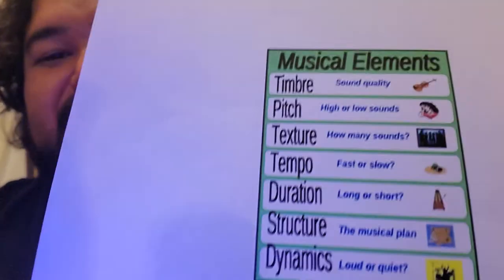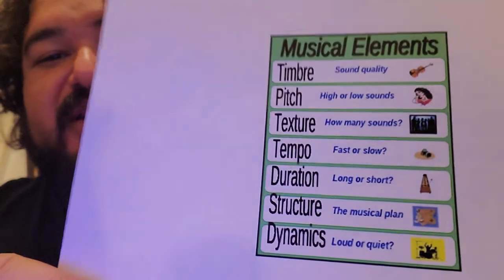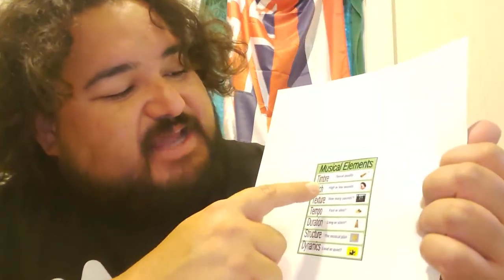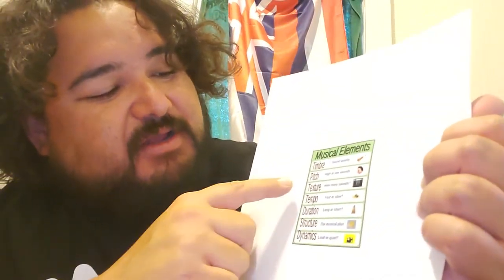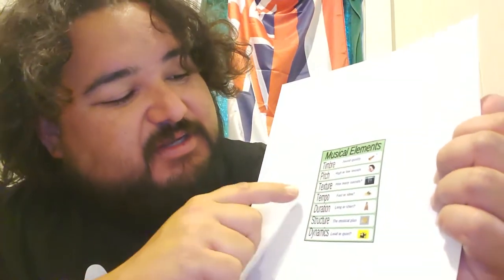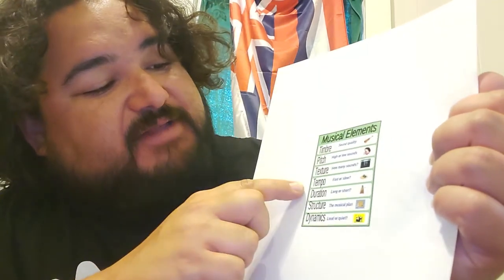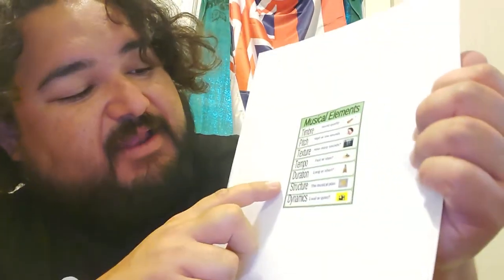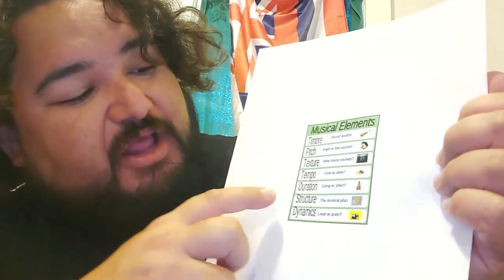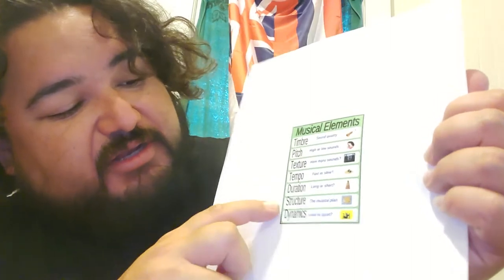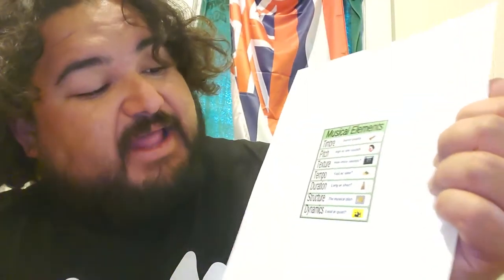Now I wanted to share some of the musical elements — remember the musical elements? We have some new ones here too. We have timbre — it looks like 'timber' but it's actually timbre — which is the sound quality of the instruments. Pitch: high or low sounds. Texture: how many sounds. Tempo: how fast or slow. Duration: long or short — how long or short the note is. Structure: the musical plan.